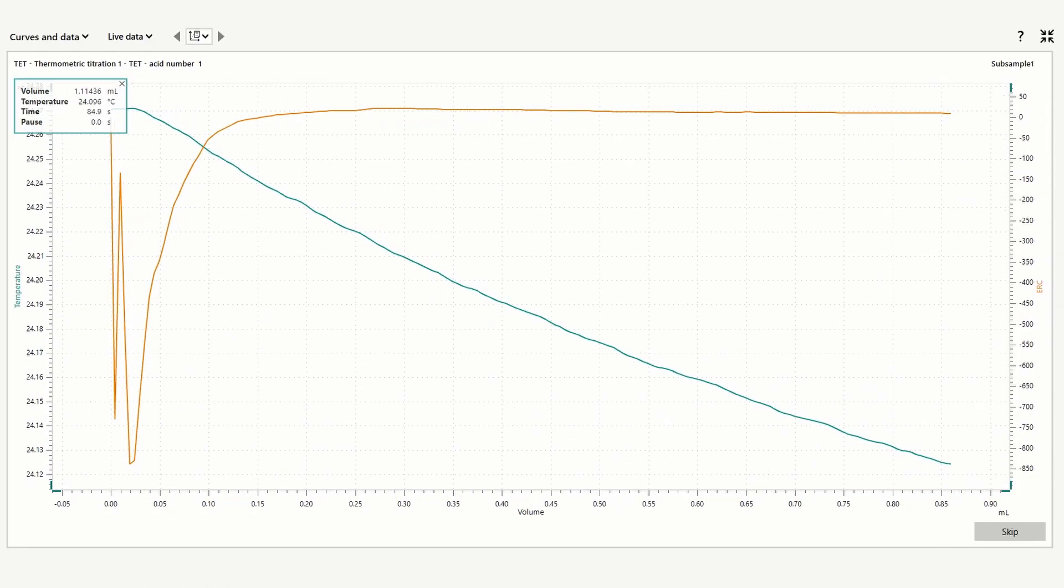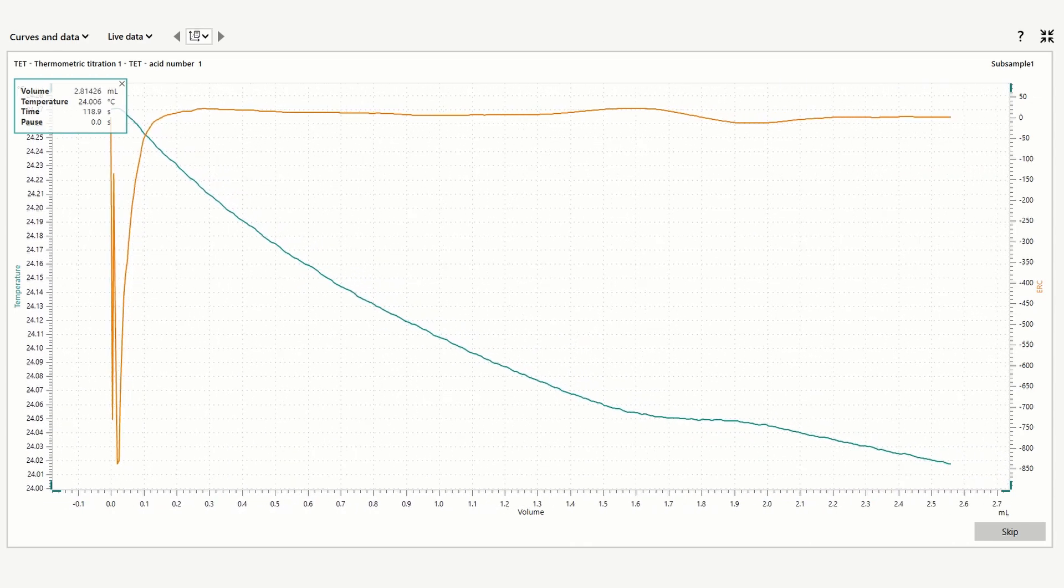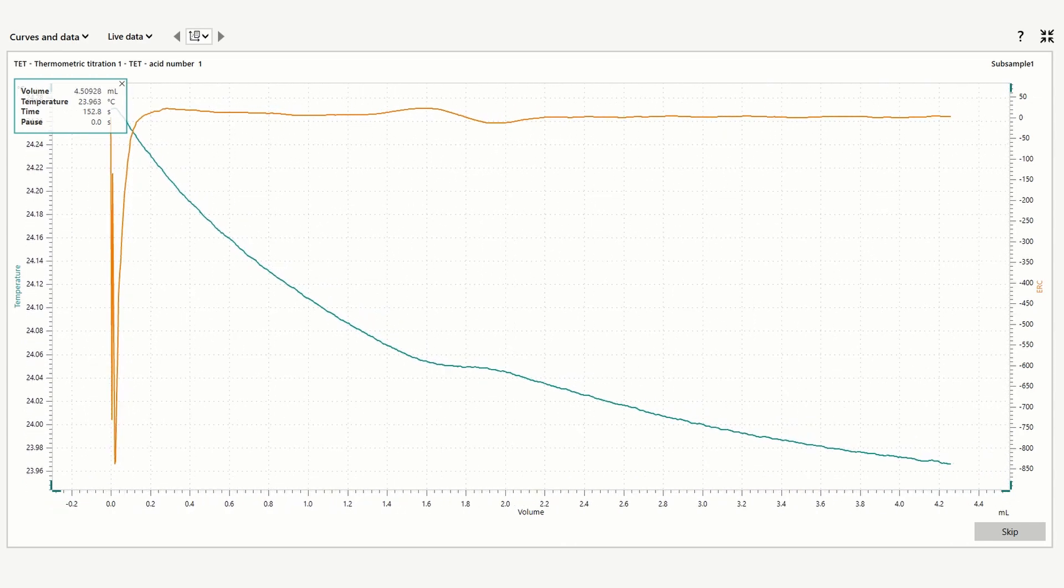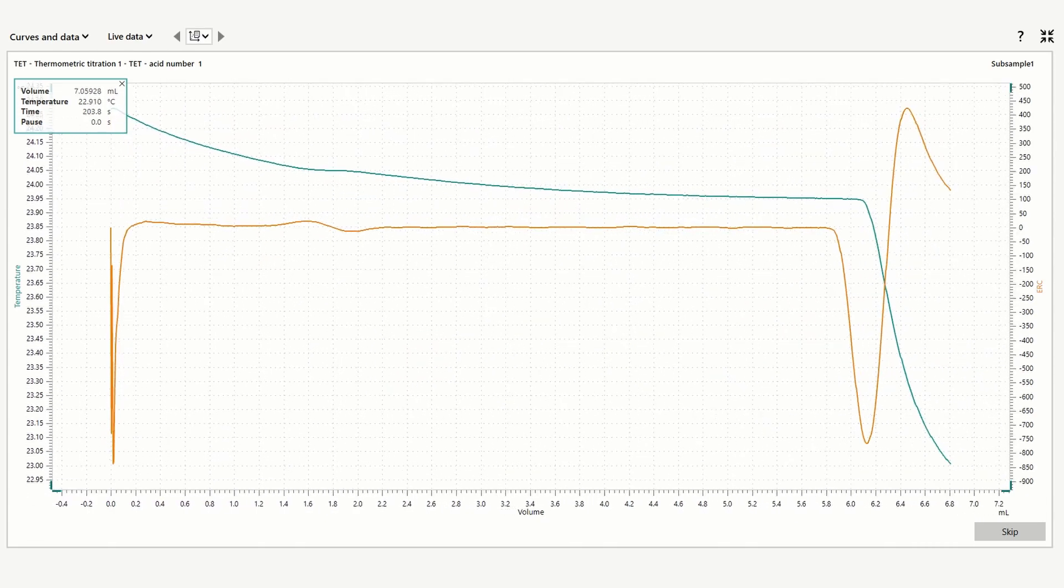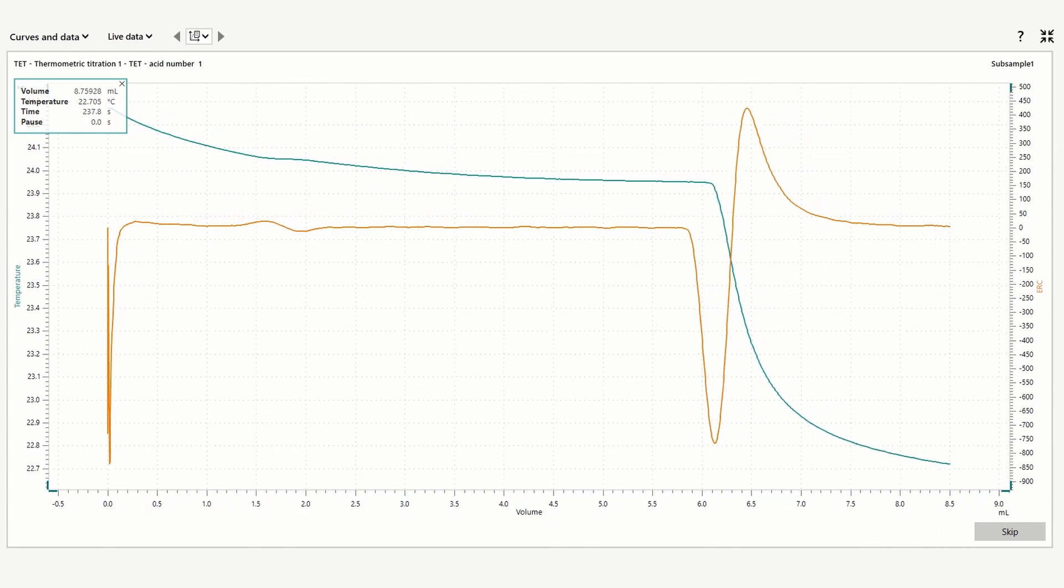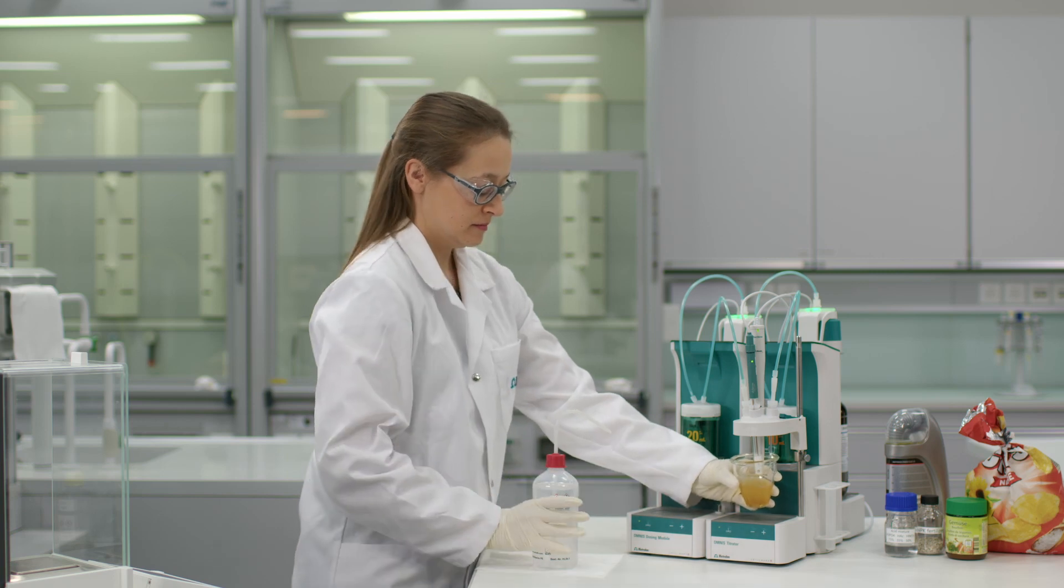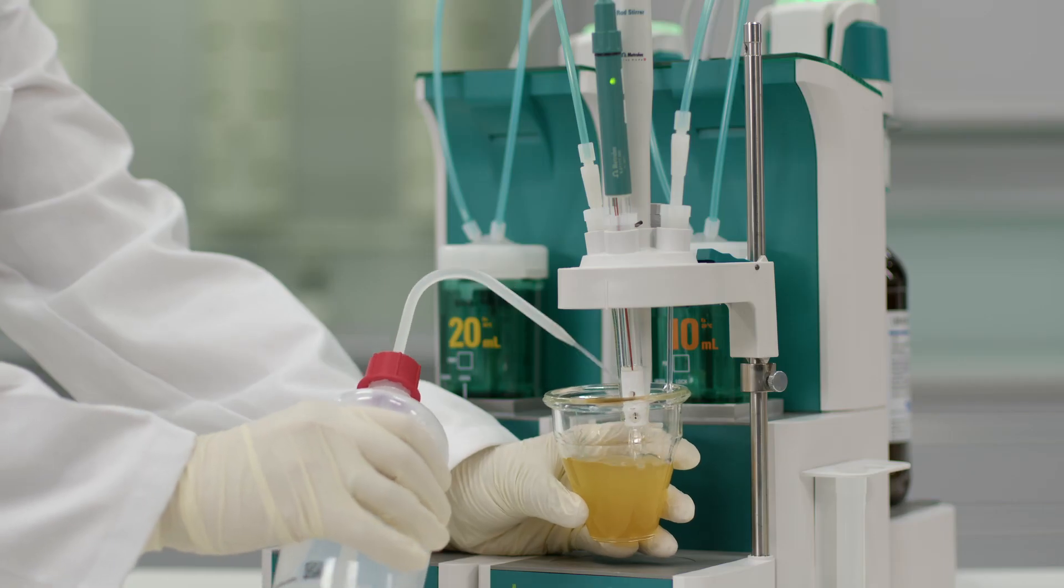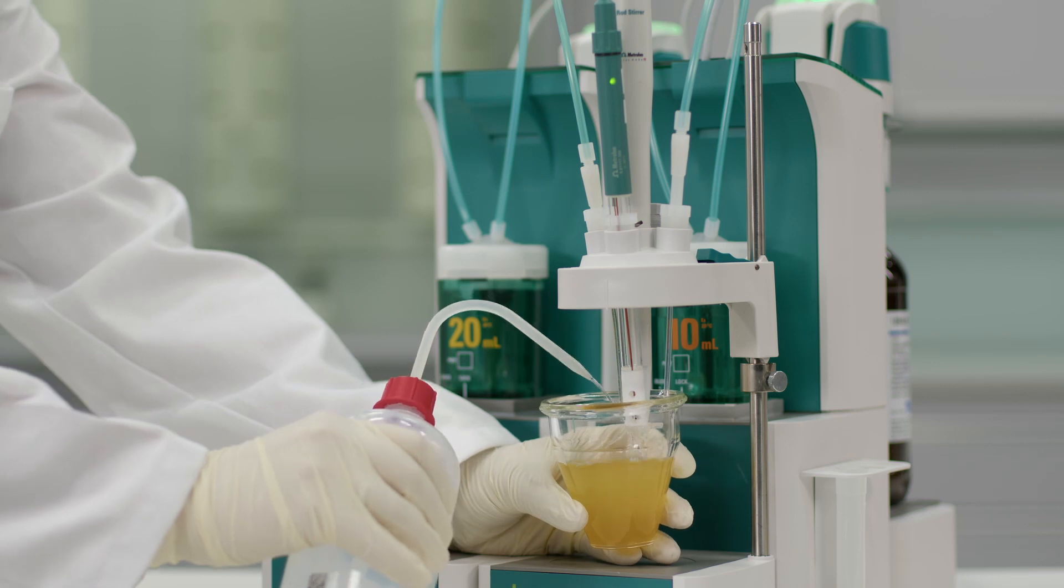One advantage of thermometric titration is the speed. Results are typically given much faster compared to potentiometric titration. It is not necessary to recondition the sensor. Simply rinse the D-thermoprobe and it is ready for the next sample.